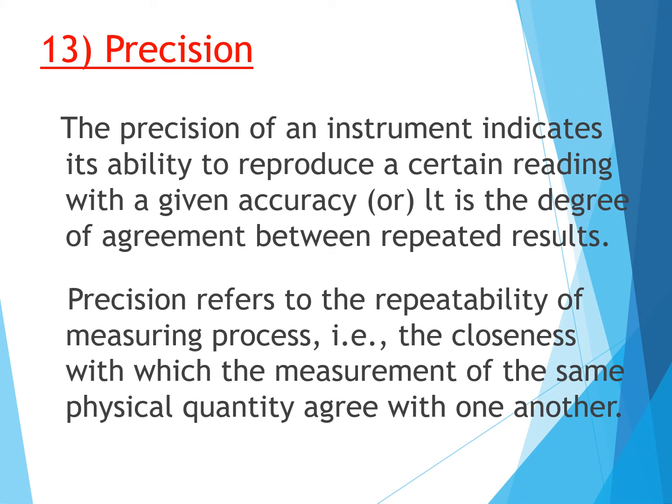The next term is precision. The precision of an instrument indicates its ability to reproduce a certain reading with a given accuracy. It should reproduce the same reading every time the instrument is used — one month, one year, or ten years later, it should give the same reading for the same input. It is the degree of agreement between repeated results.